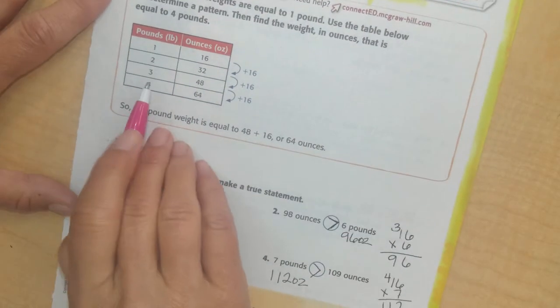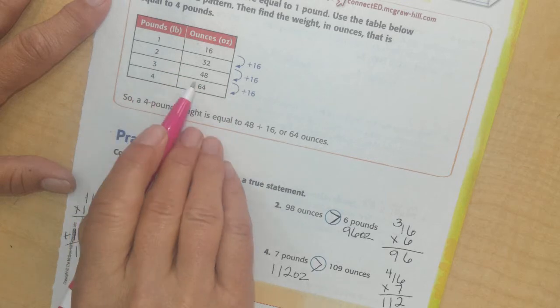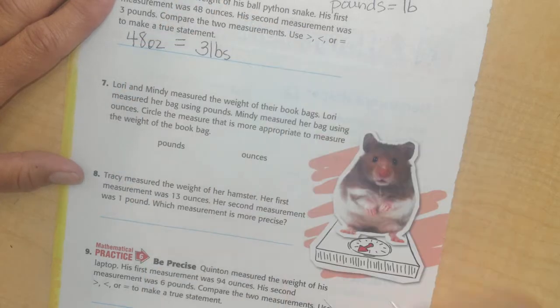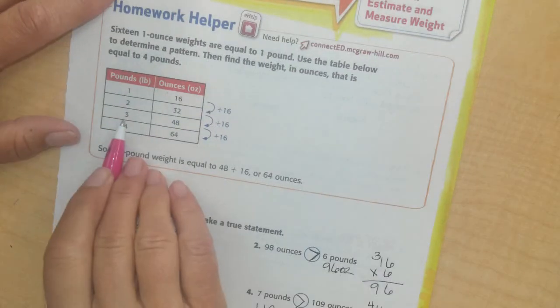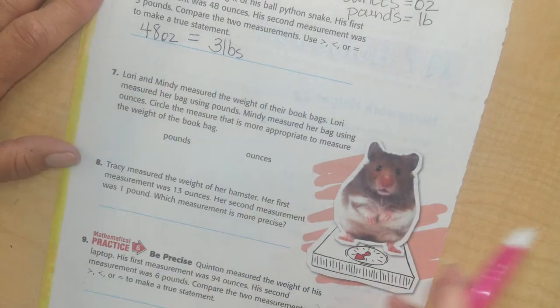Alright, so 3 pounds, let's use our chart. 3 times 16. 3 pounds is 48 ounces. Equals. 3 pounds is 48 ounces. I just looked it up right here. 3 pounds, 48 ounces. 48 ounces is equal to 48 ounces, is equal to 3 pounds.